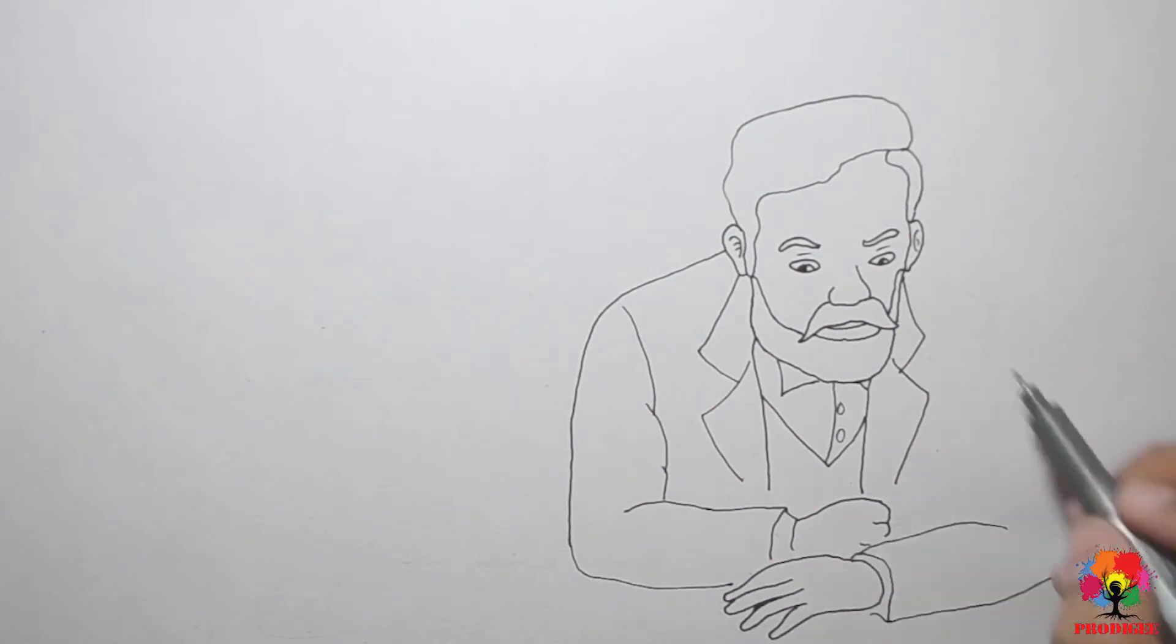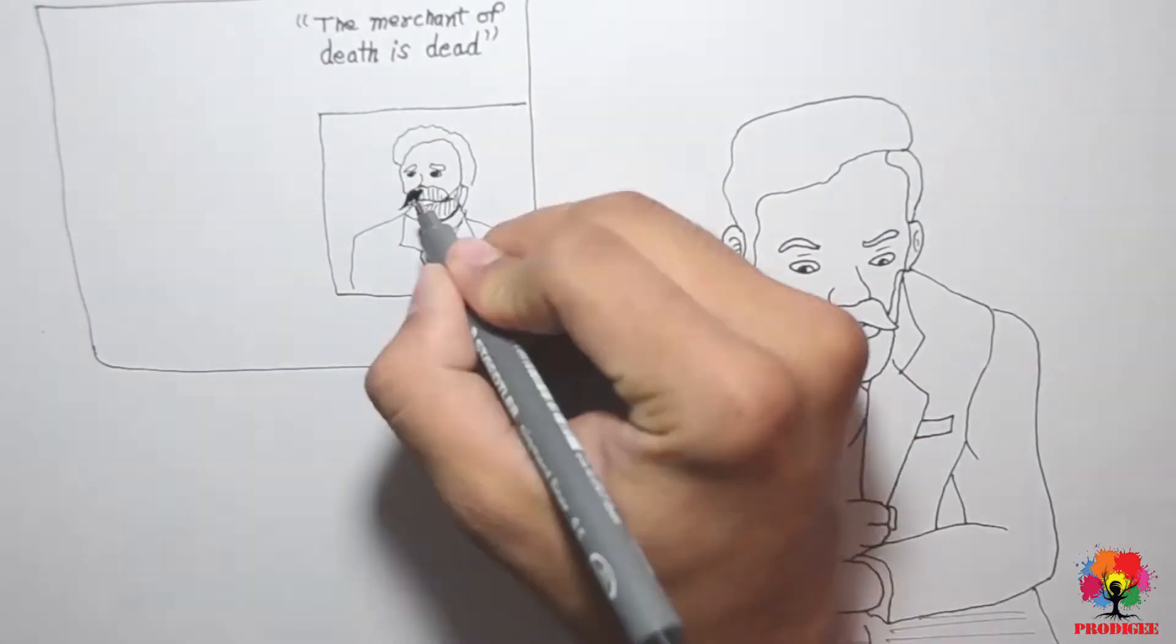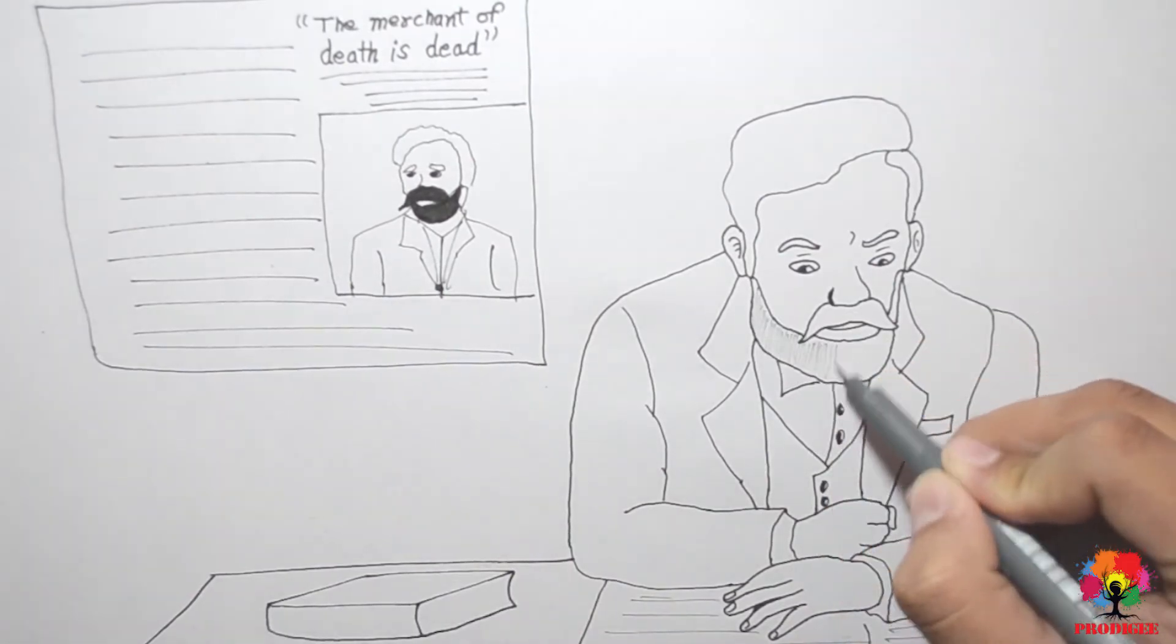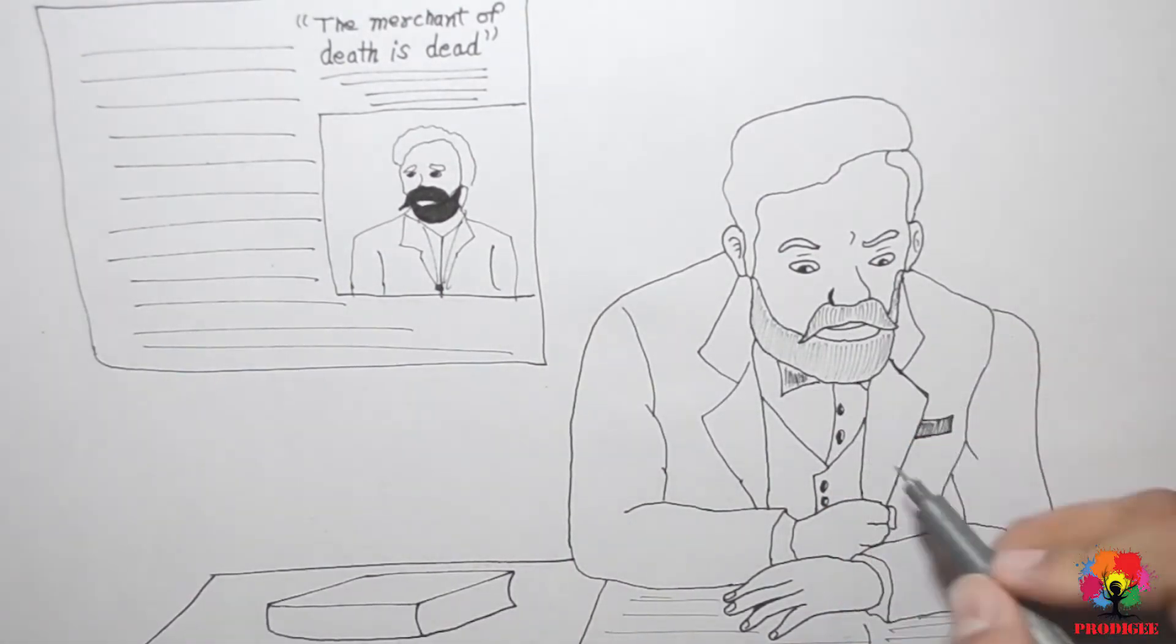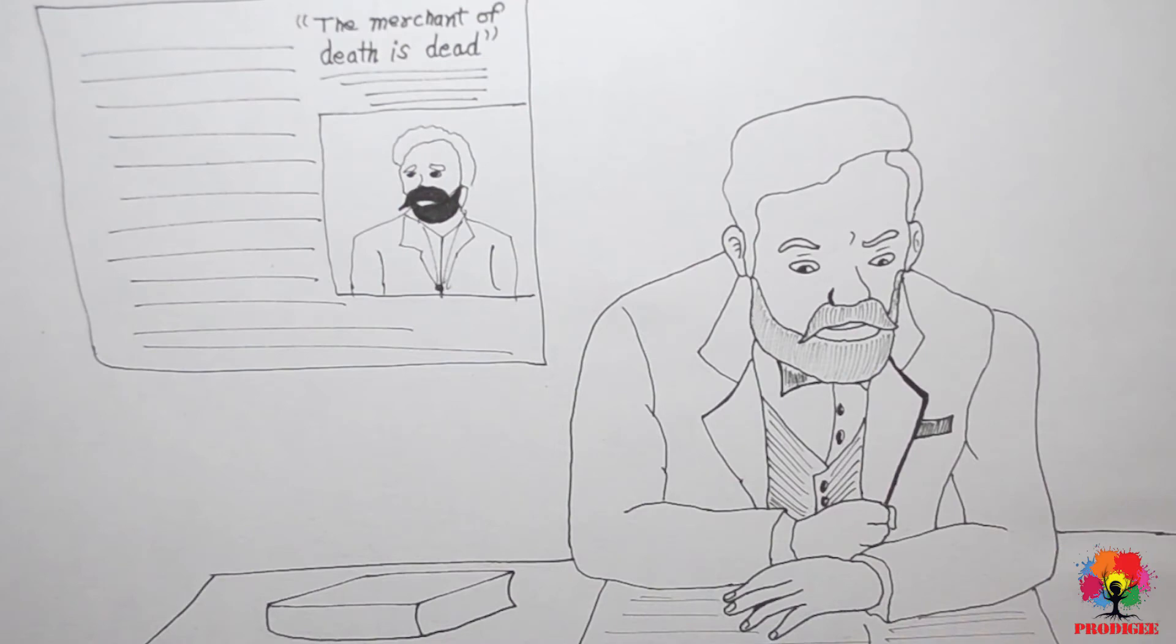The obituary mentioned his invention of dynamite, and it was stated that the merchant of death is dead. The message in the obituary was: Dr. Alfred Nobel, who became rich by finding the way to kill more people faster than ever before, died yesterday.